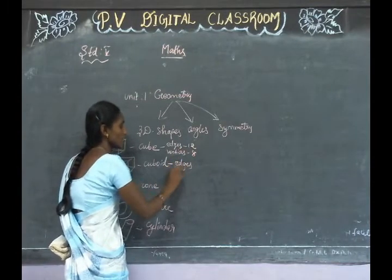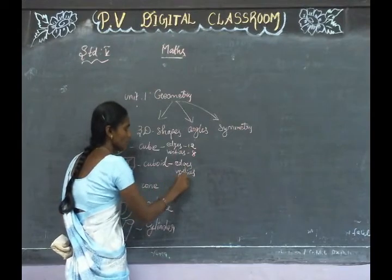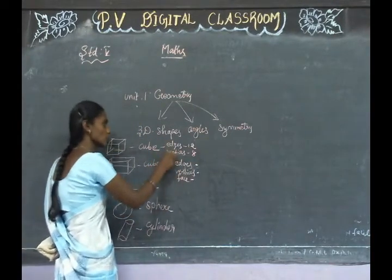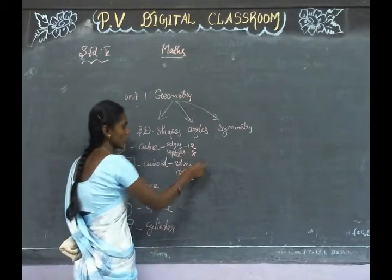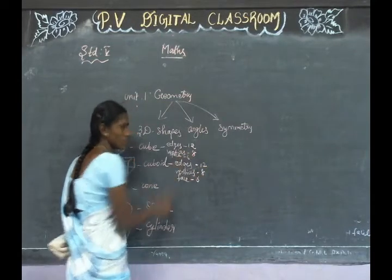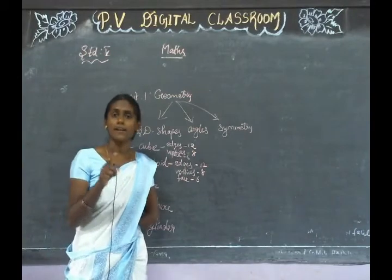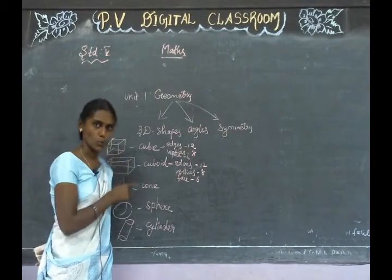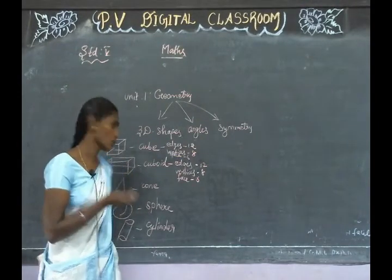Edges, vertices, and spaces. For a cube: edges are 12, vertices are 8, and faces are 6. Edges and vertices are equal. A cube — all sides are equal. A cuboid — opposite sides are equal.